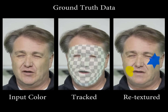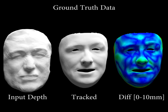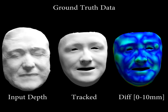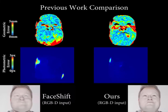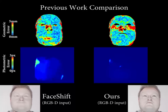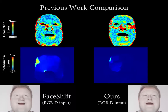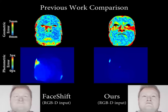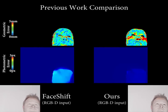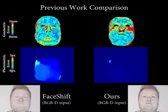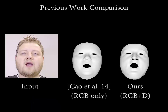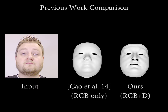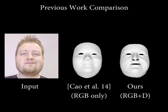We compare our tracking result against ground truth video and depth in previous work. Comparing our method against FaceShift, while the geometric alignment of both approaches is similar, our method achieves significantly better photometric alignment. A comparison against recent image-based tracking shows that our new RGBD approach reconstructs models that match shape and expression details of the actor more closely.